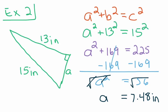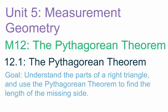We've gone through an example where we find the length of the hypotenuse in Example 1, and in Example 2, we found the length of a missing leg. That's our lesson on 12.1, the Pythagorean Theorem. Our goal: understand the parts of a right triangle — the right angle, the two legs, and the hypotenuse — and then use the Pythagorean Theorem, A squared plus B squared equals C squared, to find the length of the missing side. We'll go over another example tomorrow in class. Write down any questions or concerns and we can talk about those then.